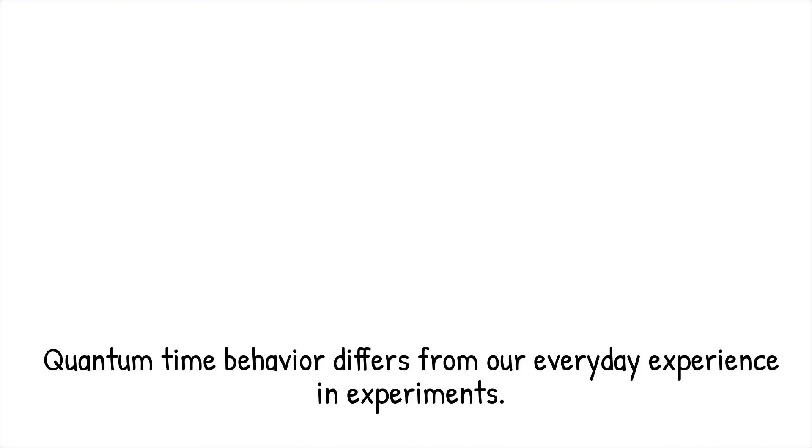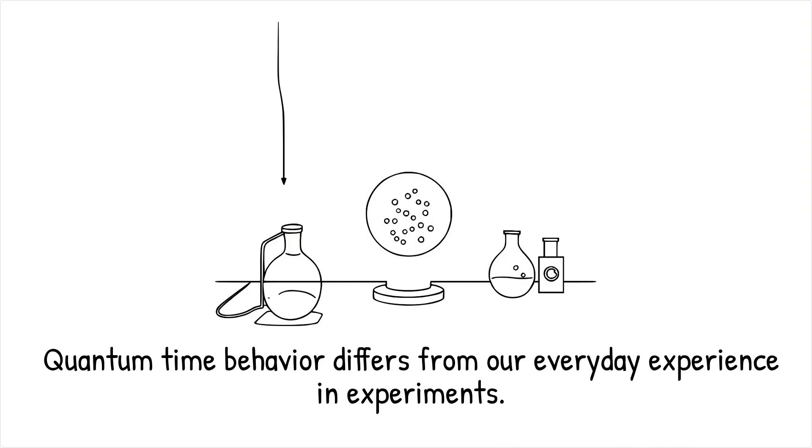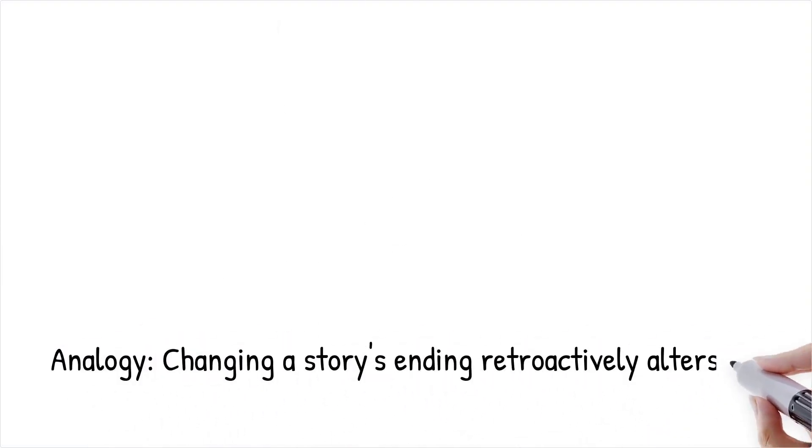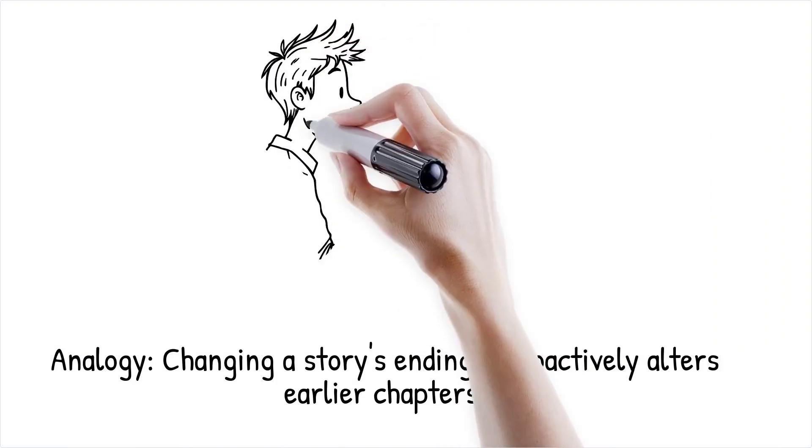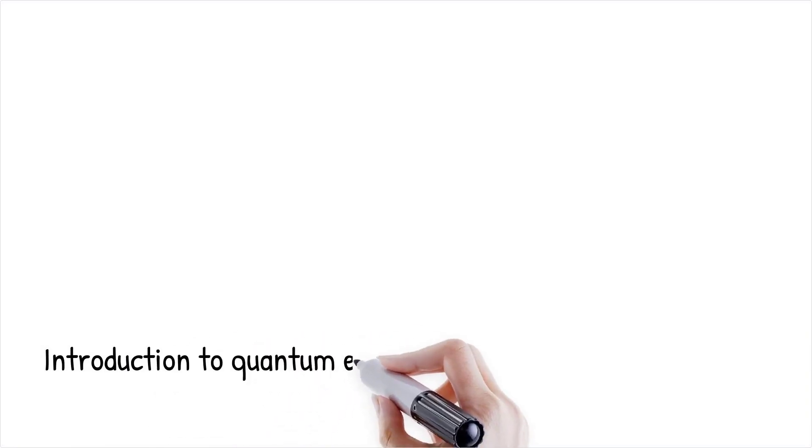In real-world experiments, precise timing ensures that the idler photon is measured much later, yet it still appears to influence the behavior of the signal photon. It's like writing a story where a friend chooses the ending later, and suddenly earlier chapters adjust themselves to fit the new conclusion.